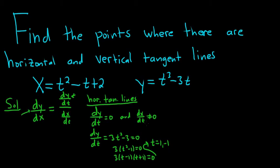We don't know if we can use these yet. We still have to check this other condition. So dx/dt is 2t - 1. Set this equal to zero, you get t = 1/2. So no problems. This is not the same as these t's. So we are going to have horizontal tangent lines at both of these numbers, at 1 and at negative 1.